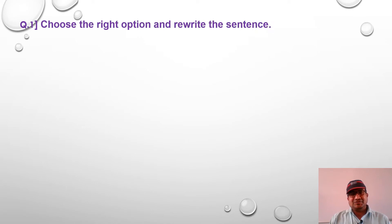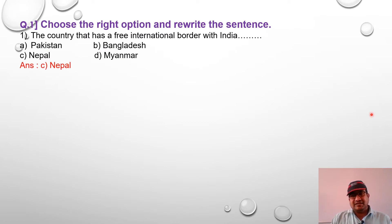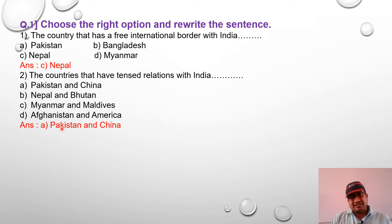Question No. 1: Choose the right option and rewrite the sentence. The country that has a free international border with India. The countries that have a tense relation with India: Pakistan and China, Nepal and Bhutan, Myanmar and Maldives, Afghanistan and America. The correct answer is Pakistan and China.